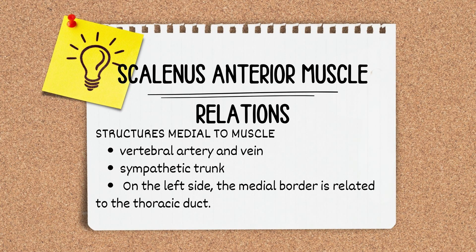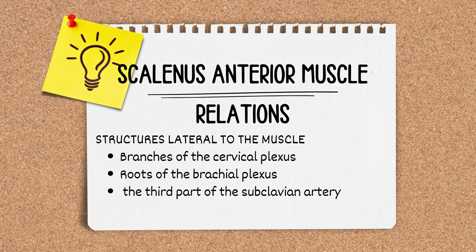The vertebral artery, vertebral vein, sympathetic trunk, and on the left side the medial border is related to the thoracic duct — these structures are present medial to the muscle. The branches and roots of the brachial plexus along with the third part of the subclavian artery are present lateral to the muscle.